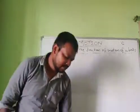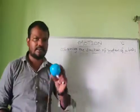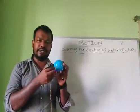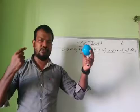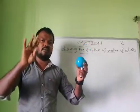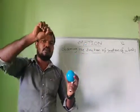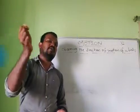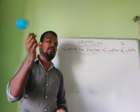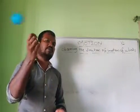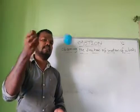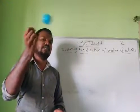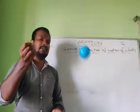Let's do one thing. You can take one ball here and try to tie a thread, keep a hole in the middle and tie a thread to this one. Just hold the ball, hold the thread in your hand and try to rotate this ball. So, is it rotating in which way? It is moving in a circular path. Yes, it is moving in a circular path.